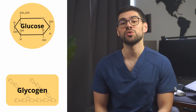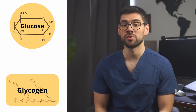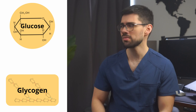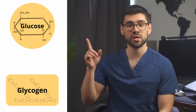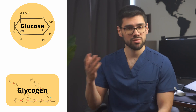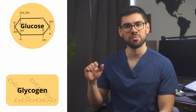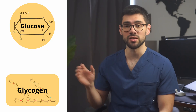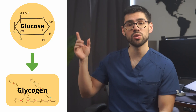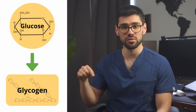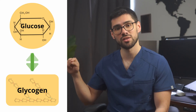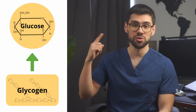So let's start with what you need to know about the physiology. It's actually not that complicated. Just imagine a diagram with glucose at the top and glycogen at the bottom. The body constantly moves back and forth between these two states. When it wants to store energy, it turns glucose into glycogen. When it wants to use the energy, it breaks the glycogen back down into glucose.